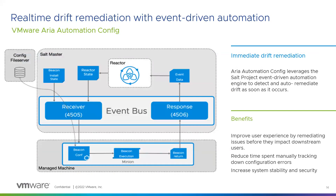Next, I want to go over the beacon and reactor system. Aria Automation Config is built on an event-driven automation engine that maintains a persistent two-way connection with each system under management, allowing it to immediately detect configuration drift and automate a response to enforce the desired state. This allows administrators to eliminate costly troubleshooting by establishing a configuration policy and telling Aria Automation Config to monitor and respond to any unauthorized changes.